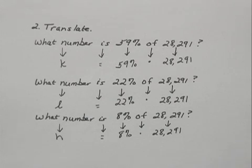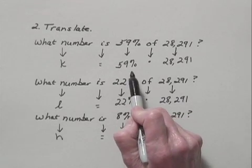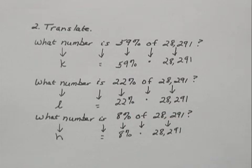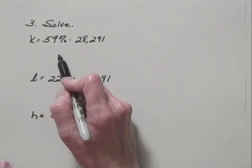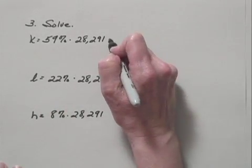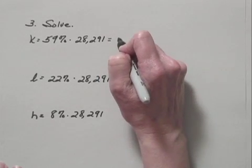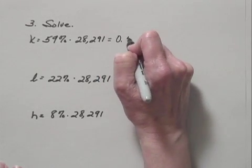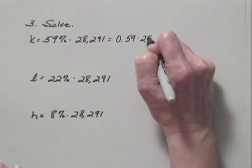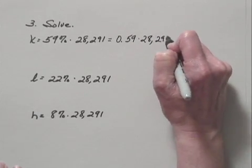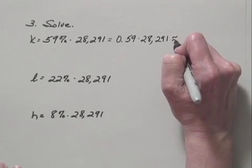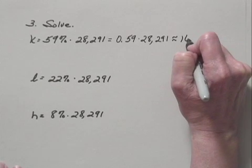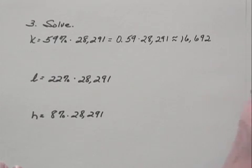And we can solve each of them by converting percent notation to decimal notation, and then carrying out the multiplication. So let's go to that step, the third step of our process. This is our first equation: K equals 59% times 28,291. 59% written in decimal notation is 0.59, and we're multiplying this times 28,291. And when we carry out this multiplication and round to the nearest one, we get that it's approximately equal to 16,692.